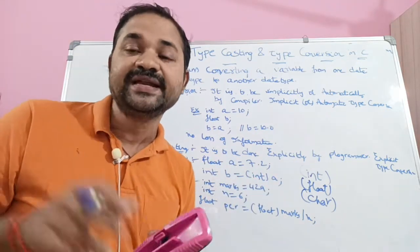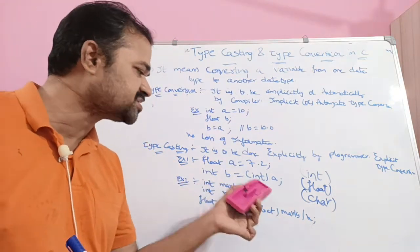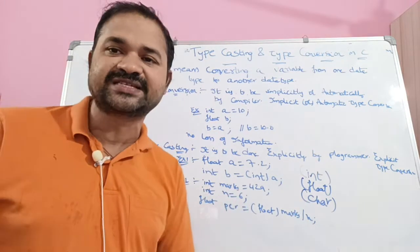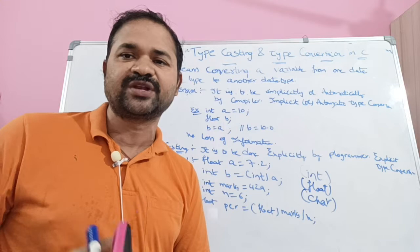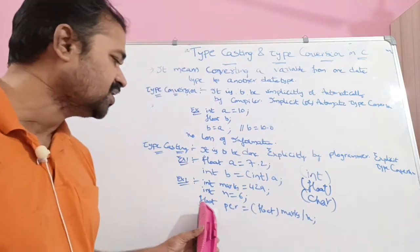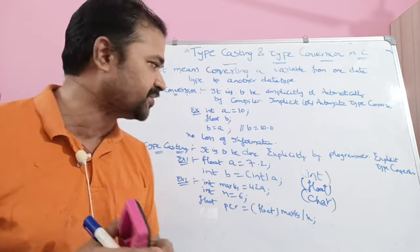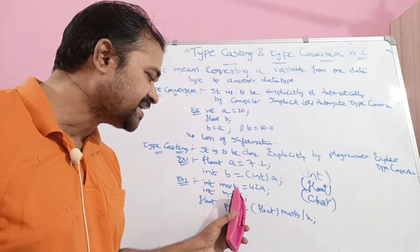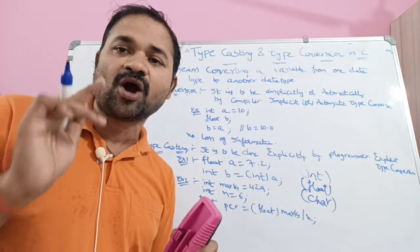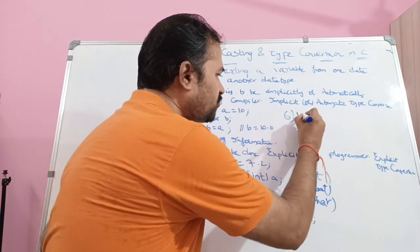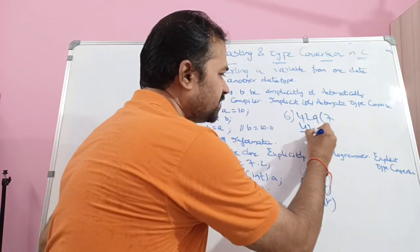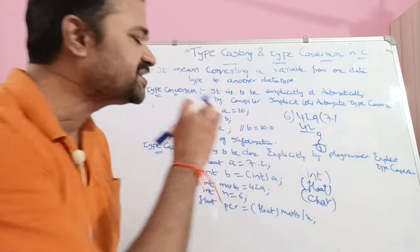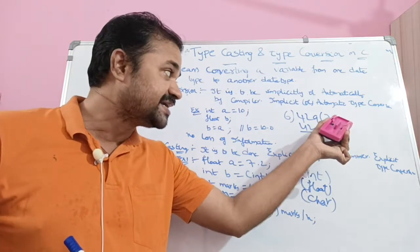Let's see a second example. Int marks is equal to 429. Int number of subjects N is equal to 6. Total number of subjects is 6. Now, float percentage is equal to marks divided by N. In C language, marks is integer and N is integer. Integer divided by integer always returns an integer. So 429 divided by 6 gives 71 as integer result.